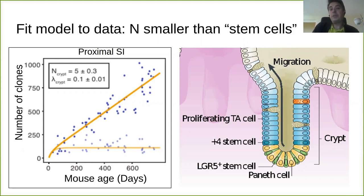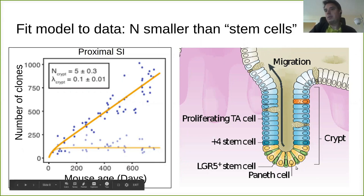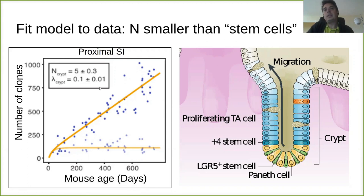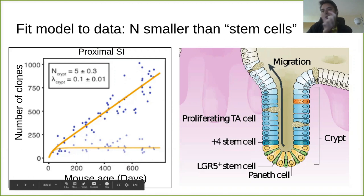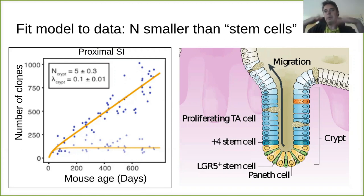This can be fit to the data, giving predictions for the number of stem cells competing in each gland and their replacement rate. Interestingly, if you go into the crypt base and count cells that morphologically look like stem cells, you get around 16 to 30, but the model predicts only about five are actually competing — perhaps only the bottom five engage in competition, while others are already on their way out or committed to a particular fate.